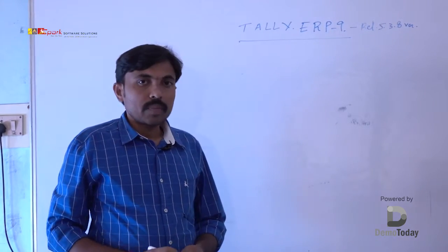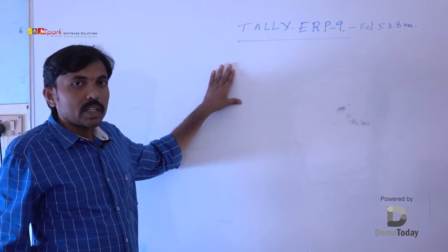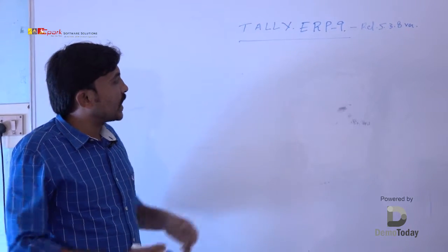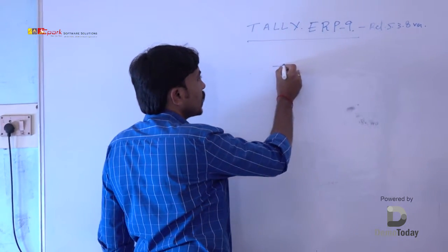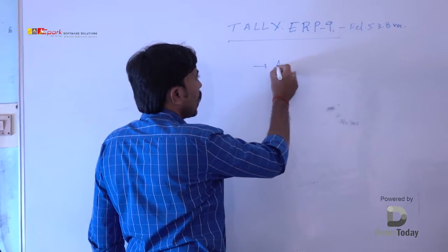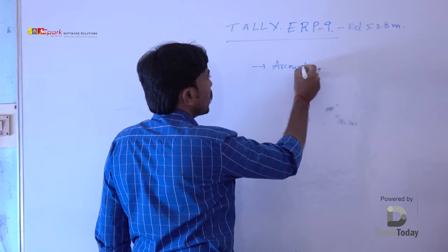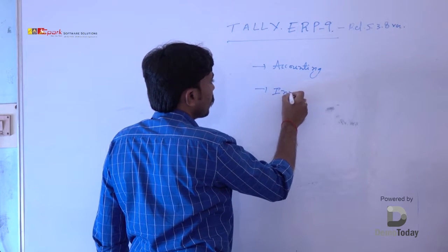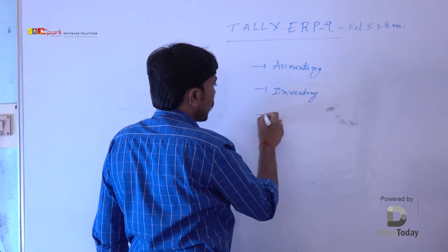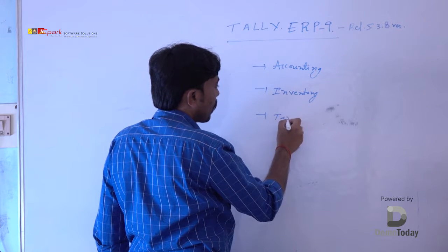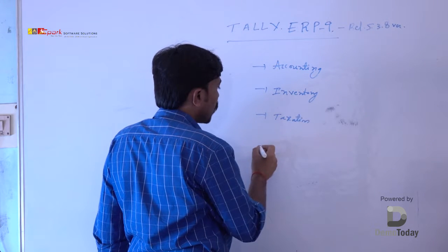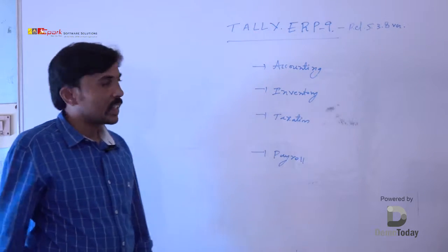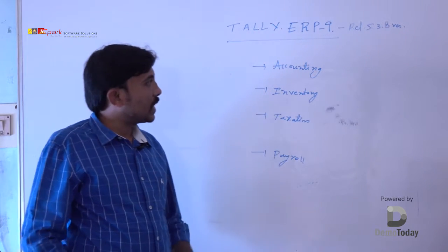Tally ERP9 mainly has four integrated modules: Accounting, Inventory, Taxation, and Payroll. These four are the integrated modules in Tally ERP9.